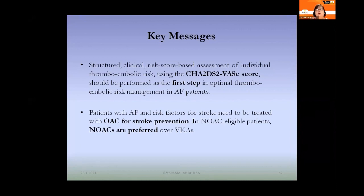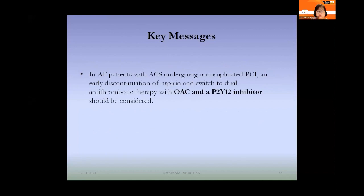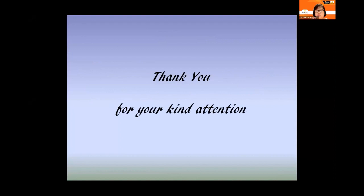Key messages: Use the CHA2DS2-VASc score as the first step for structured thromboembolic risk assessment. Patients with AF and stroke risk factors need oral anticoagulation. In NOAC-eligible patients, NOACs are preferred over vitamin K antagonists. Assess bleeding risk using the HAS-BLED score and address all modifiable bleeding risk factors. For AF patients with acute coronary syndrome undergoing uncomplicated PCI, early discontinuation of aspirin and switch to dual antithrombotic therapy with OAC and clopidogrel should be considered. Thank you very much.